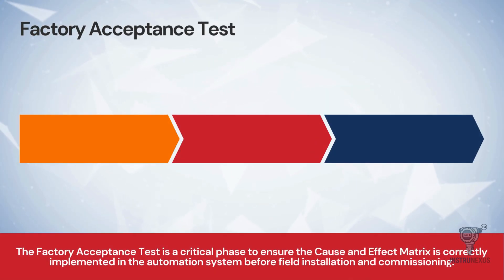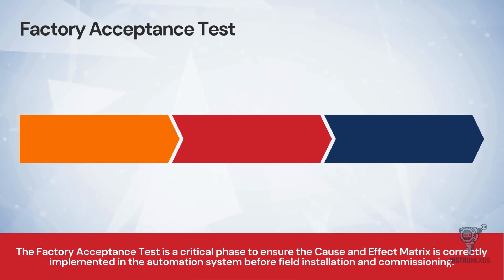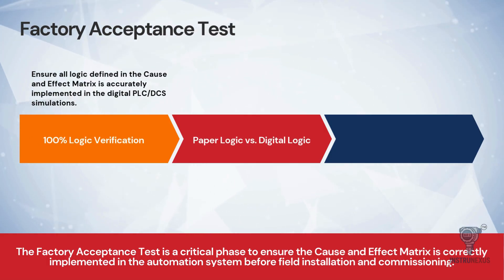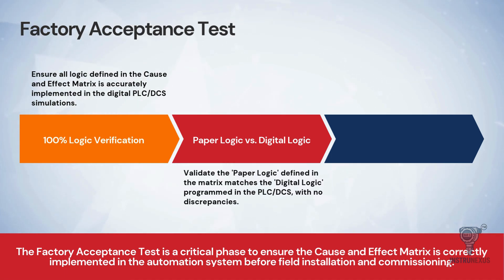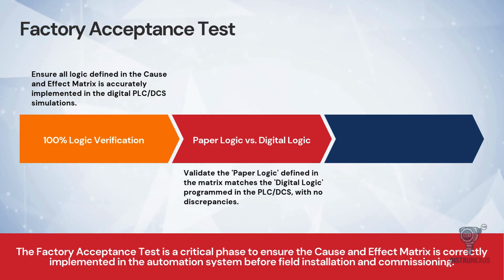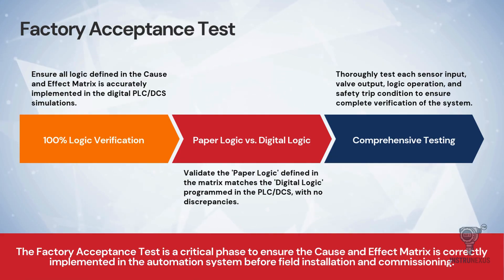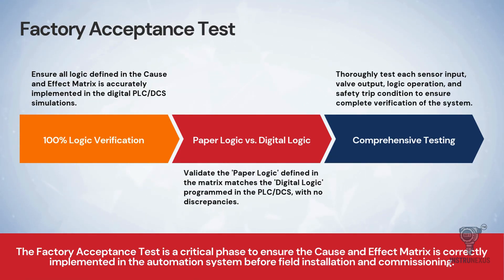Before the system ever touches the plant floor, it undergoes a factory acceptance test, or FAT. This is a comprehensive simulation environment, and the goal is 100% logic verification. We are comparing the paper logic — the cause and effect matrix we just wrote — against the digital logic running inside the PLC simulation. We trigger every single virtual sensor and watch the virtual valve's response to ensure there are absolutely no discrepancies. We test every input, every output and every trip condition. Any error found here is logged, fixed in the code and retested to ensure the digital brain matches the engineering blueprint.